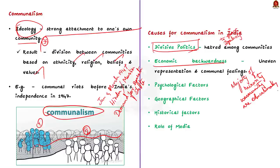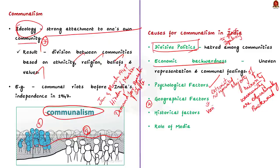The third cause is psychological factors. Psychological factors play an important role in the growth of communalism. For example, some Hindus believe Muslims are extremist and unpatriotic, while Muslims feel they are not properly represented in India. These emotions contribute to the growth of communalism. The fourth cause is geographical factor. In India there are several variations in mode of life, culture, belief, and social norms between various religious groups like Hindus, Muslims, and Christians due to geographical location. These variations may cause conflict between religious groups and end up in communal unrest.